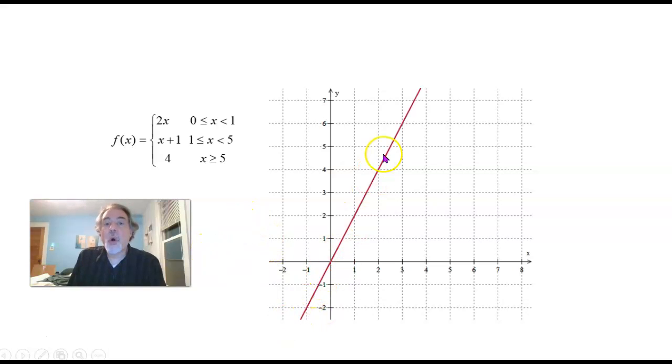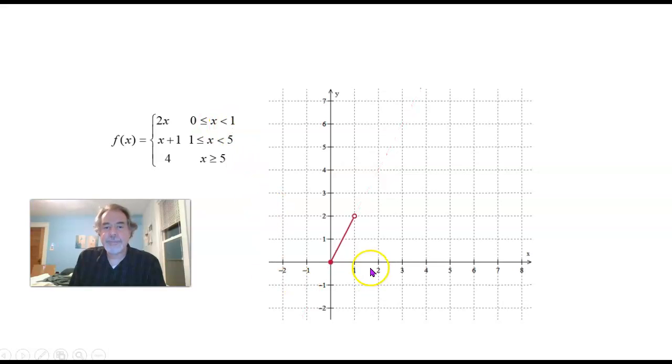Notice it's a straight line with a slope 2 and a Y intercept here at 0. Now we don't have all of this line. We just have the part of the line where X is between 0 and 1, greater than or equal to 0 but less than 1. So I only want the points on that line that have X coordinates between 0 and 1, including the point where X is 0, not including the point where X is 1.